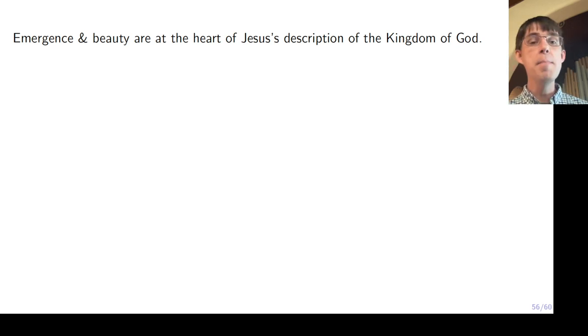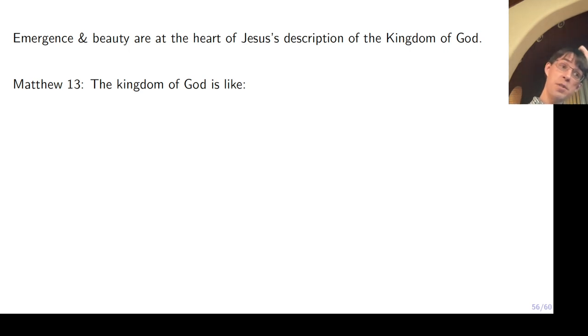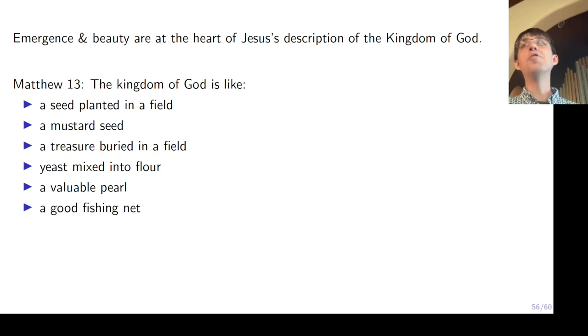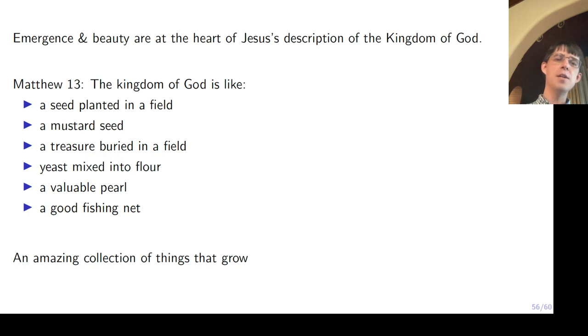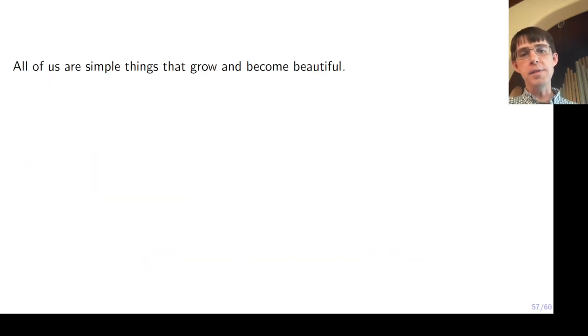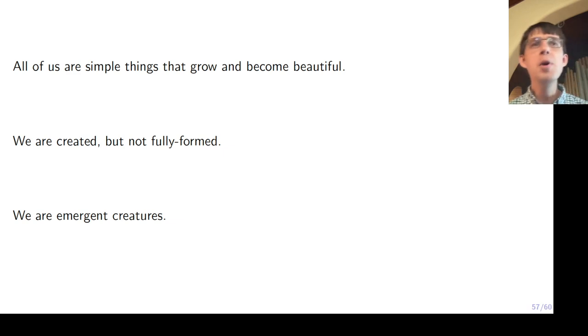And actually, when you look at it, these themes, emergence and beauty, they are actually at the heart of Jesus's description of the kingdom of God. So if you look in Matthew 13, this is a chapter in which Jesus gives several kind of mini parables about the kingdom of God is like this and this and this. And this is what he says in this chapter. The kingdom of God is like a seed planted in a field, or like the mustard seed, or like a treasure buried in a field, or like yeast which is mixed into flour, or like a valuable pearl, or like a good fishing net. This is a kind of a ragtag assortment of different ideas, but this is an amazing collection of things, things that grow, things of beauty and value, simple things. I think all of us are simple things that grow and become beautiful. We are created by God, but not fully formed. Of course, when we're created, we are not fully formed at all. But we emerge. We are emergent creatures.